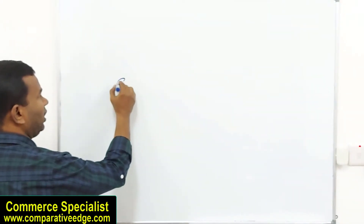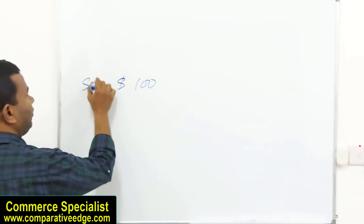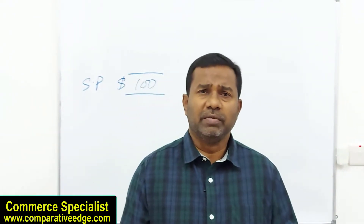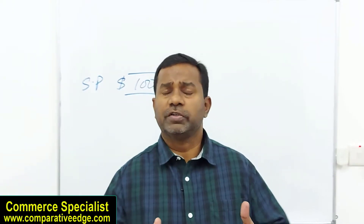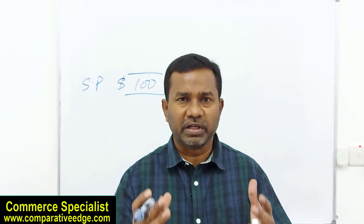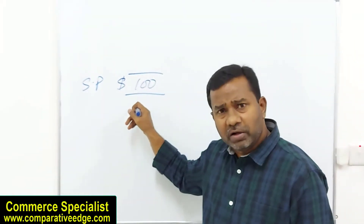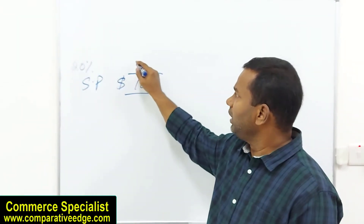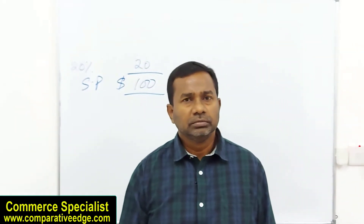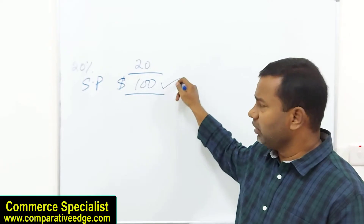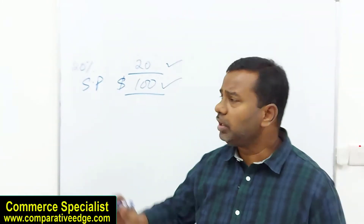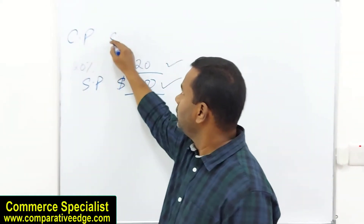Let's begin with an example. Assume there is a product which sells in the market for $100 — that's the selling price. If you are a public limited company or even a sole trader, you have certain expectations from the business. So if your product sells for $100 and you expect a 20% return, that's $20. This means the cost of the product should be $80.